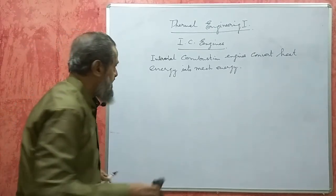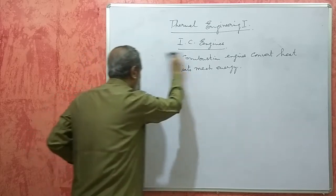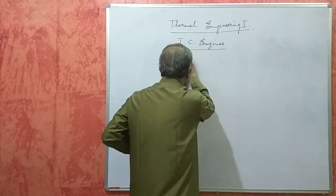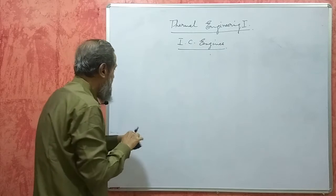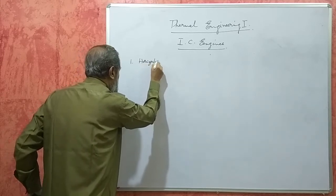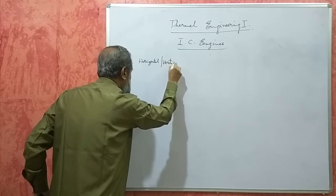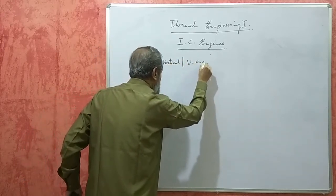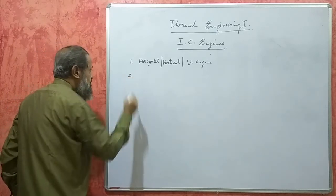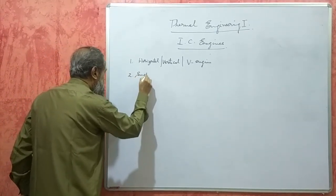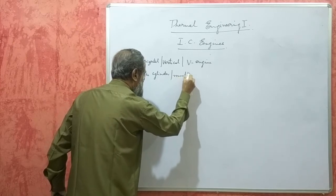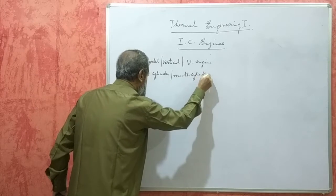These IC engines can be broadly classified into different types depending upon various factors. One way of classification is by cylinder orientation: horizontal engine, vertical engine, V engine, etc., depending upon how the cylinders are placed. Next, they may be a single cylinder engine or a multi-cylinder engine — that is more than one cylinder — in which case you call it a multi-cylinder engine.